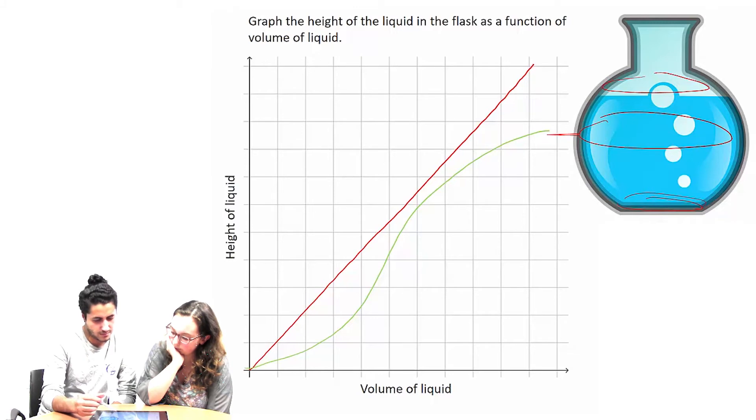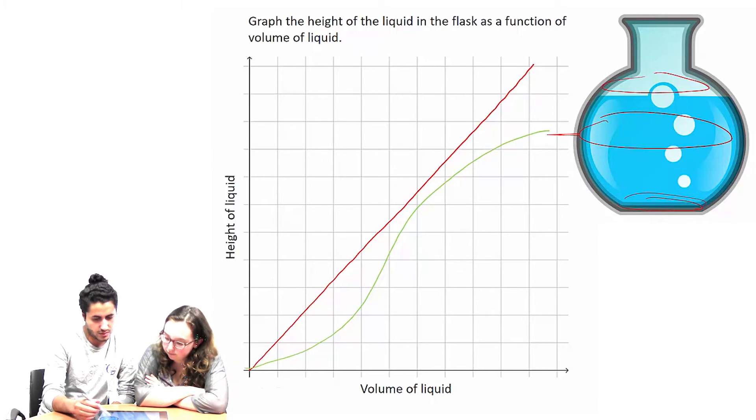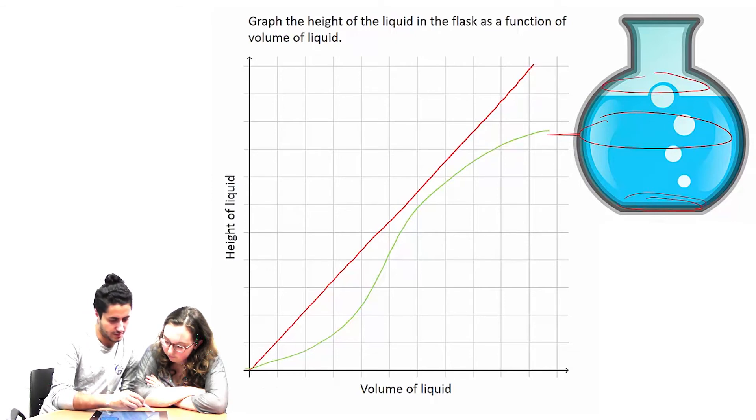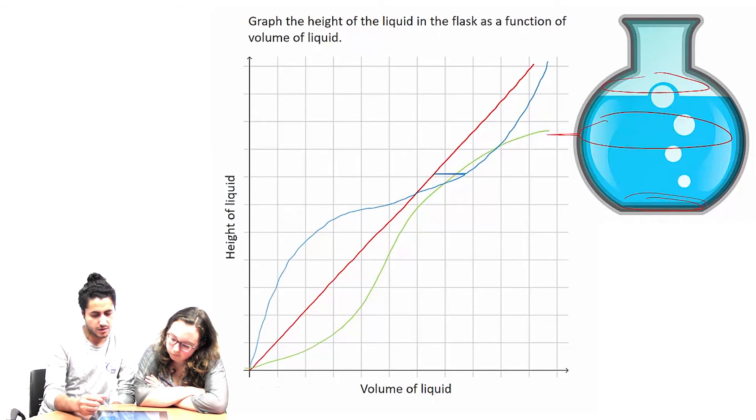So when you're adding the water, would it then be something like this instead? How come? Because when you're adding the water, the height is going to go up really fast here, with a little bit of amount, with the little bit of volume in the section.